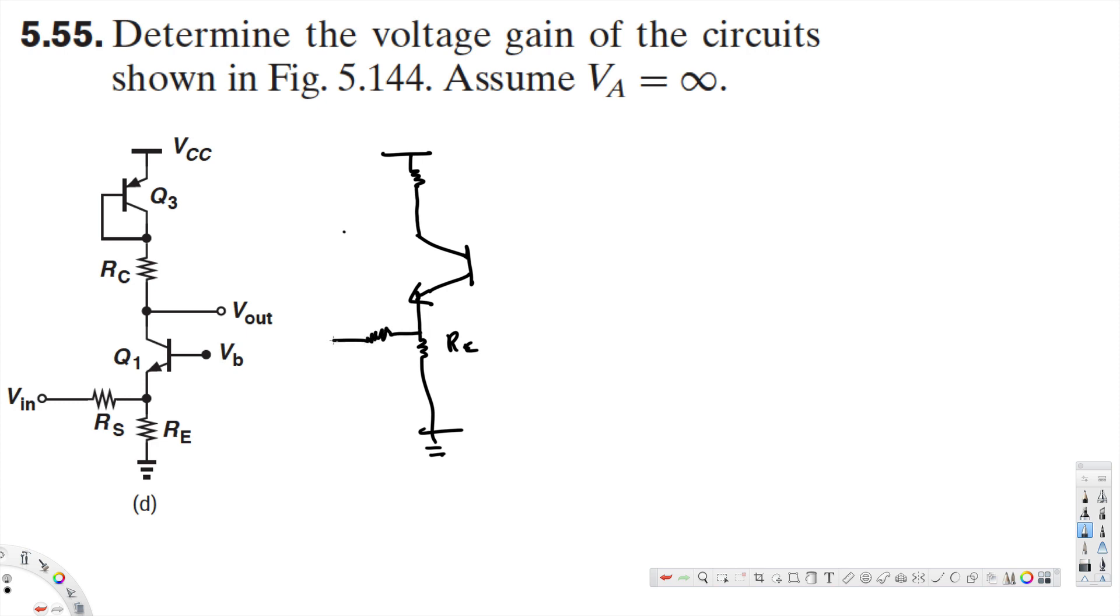Here we have resistor RS and VIN is right here. RS is connected to VB, and this is RC plus R equivalent. Here we have Vout and this is VCC.